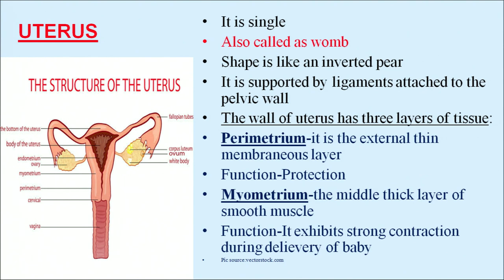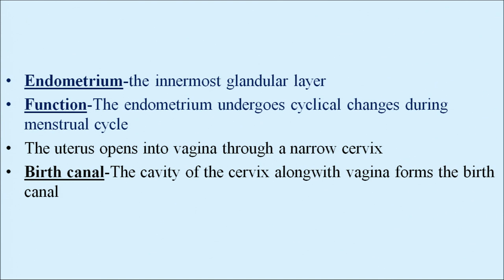The uterus is single, also called the womb, and is shaped like an inverted pear. It is supported by ligaments attached to the pelvic wall. The wall of the uterus has three layers: the outermost layer is the perimetrium, an external thin membranous layer that performs protection; the myometrium is the middle thick layer of smooth muscles which exhibits strong contractions during delivery of the baby (parturition); and the endometrium is the innermost glandular layer, performing important cyclical changes during the menstrual cycle.